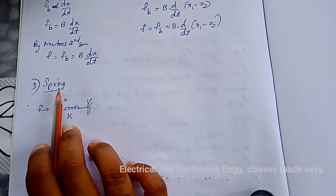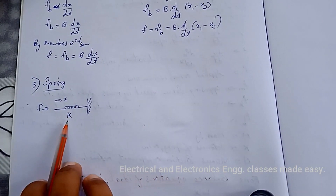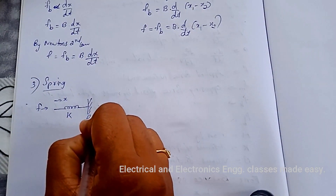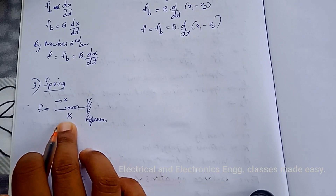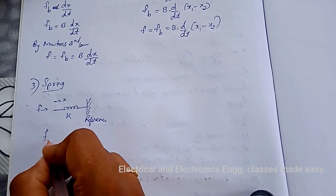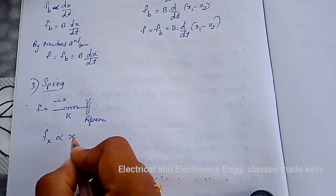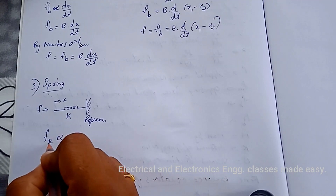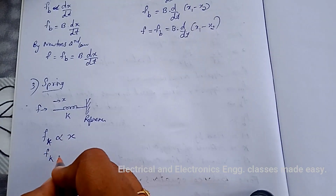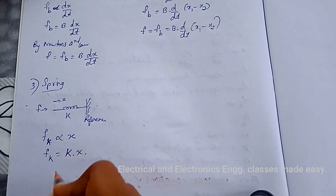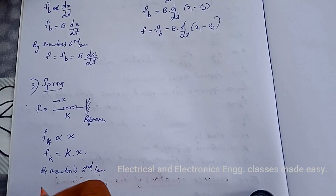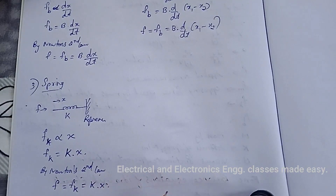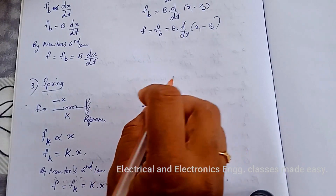Next is the ideal spring with one end fixed to reference. The spring will offer an opposing force Fk which is proportional to the displacement of the body, so Fk = k·x. By Newton's second law, the applied force F = Fk = k·x.